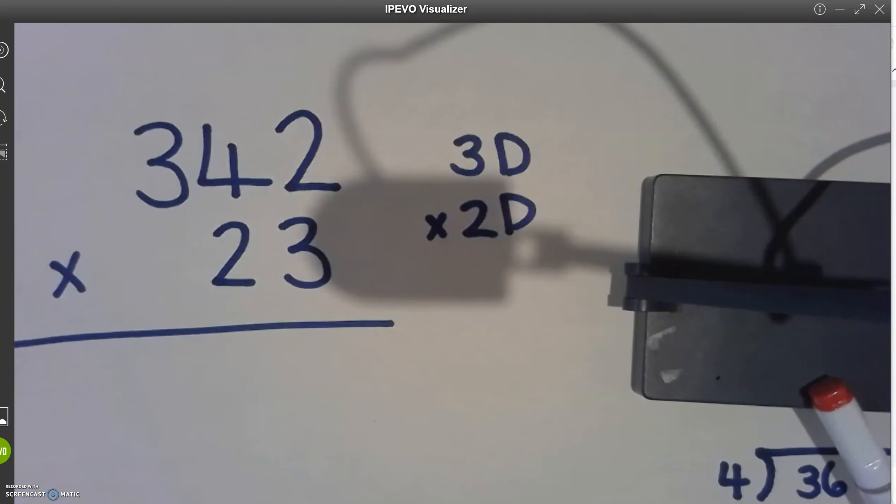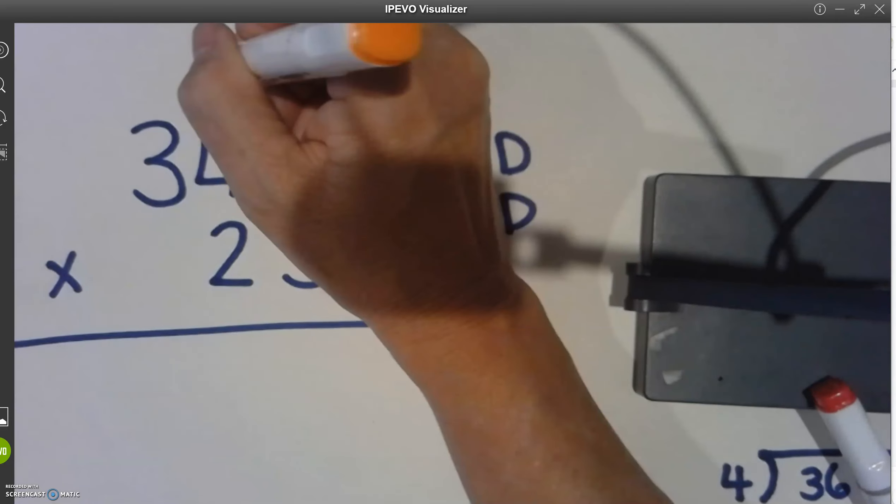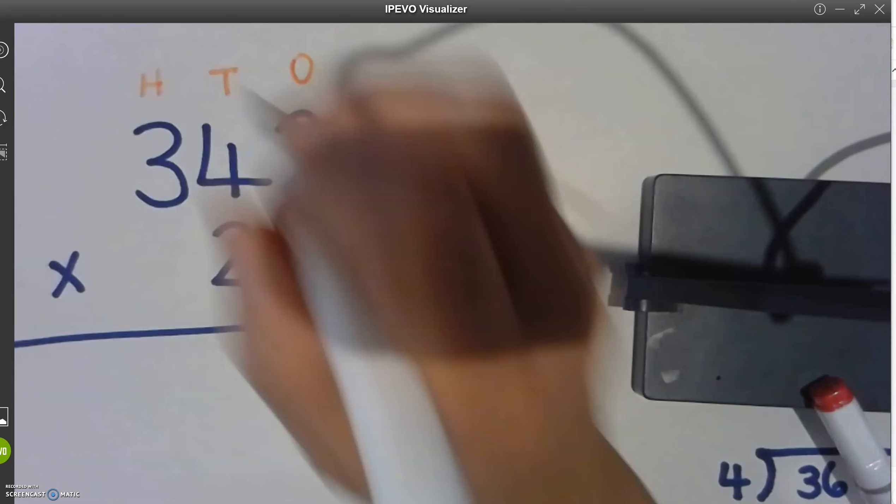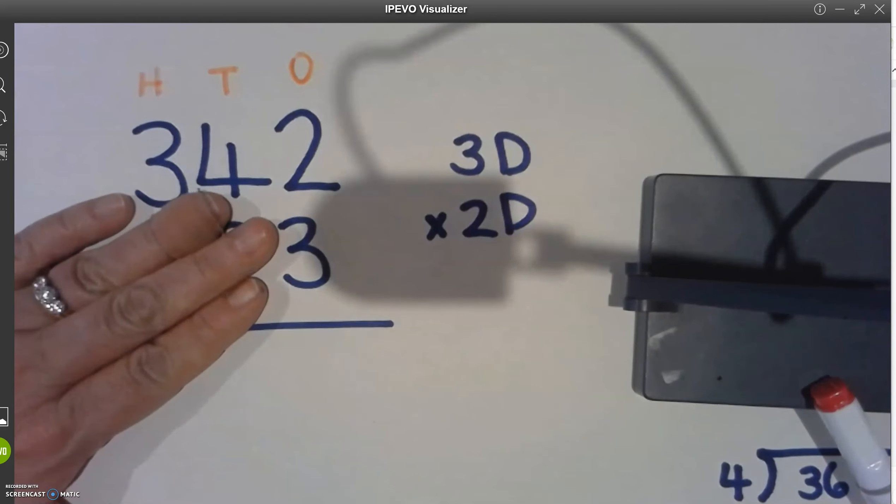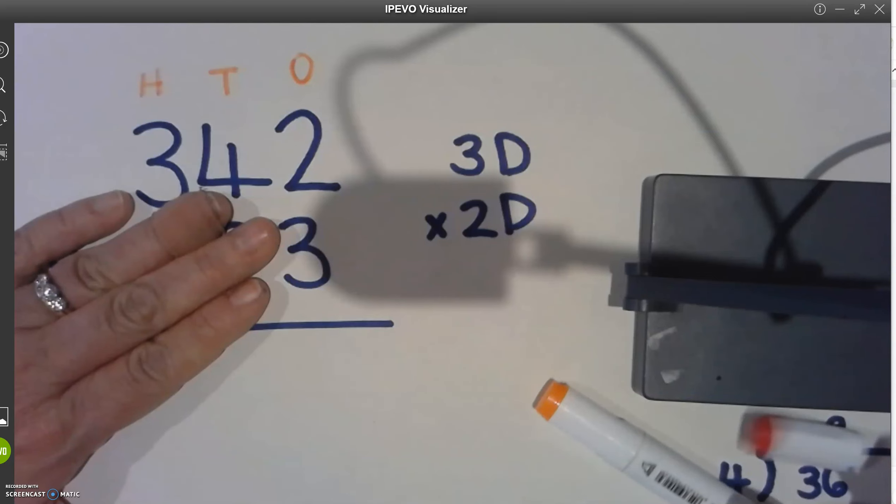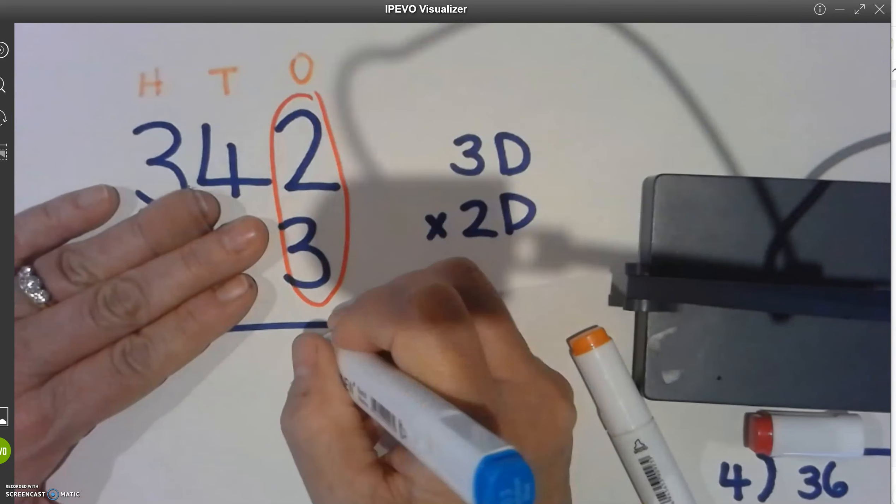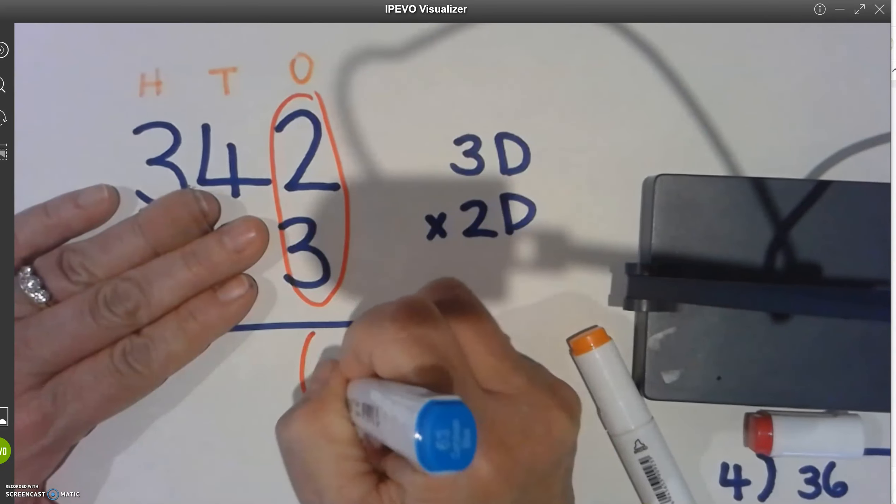I'm going to now recognize that I have got my ones, my tens and my hundreds. And we're going to first of all deal with our ones first. Let's do that. So our first surfboard, two multiplied by three is six.